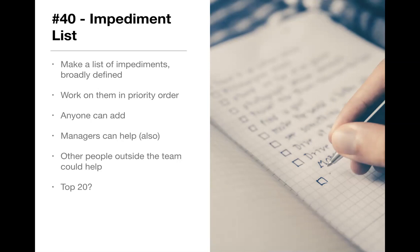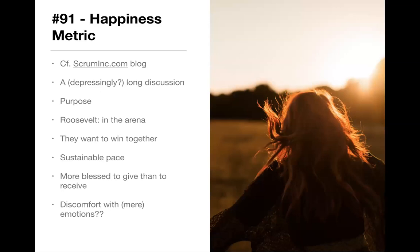I put the impediment list on my five boxes of artifacts. The happiness metric is another one — it seems a little controversial even amongst them. But you should be aware that Jeff Sutherland has spoken many times on his blog at scruminc.com about the happiness metric. Two things I've heard him say quite frequently: one is that if you're not having more fun, you're not doing scrum right; and the other is that fun is essential. In the Scrum Book there's a depressingly long discussion of happiness.